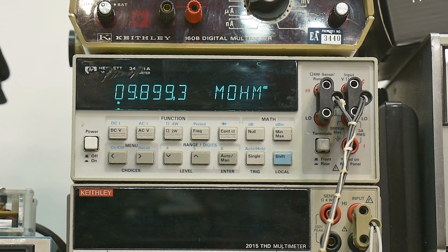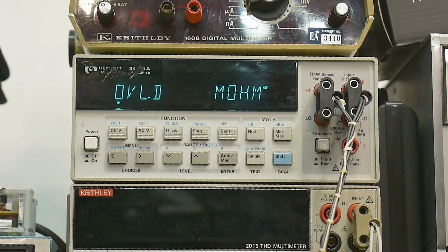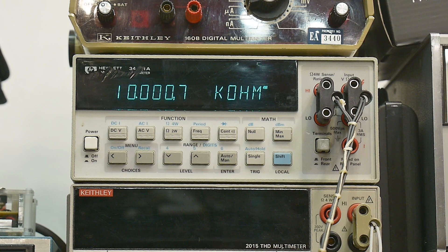There we go, 9.899. This one is supposed to be 90k - 89.999, very good. This one is supposed to be 10k - look at that, 10.0007. This one's supposed to be 900 ohms.